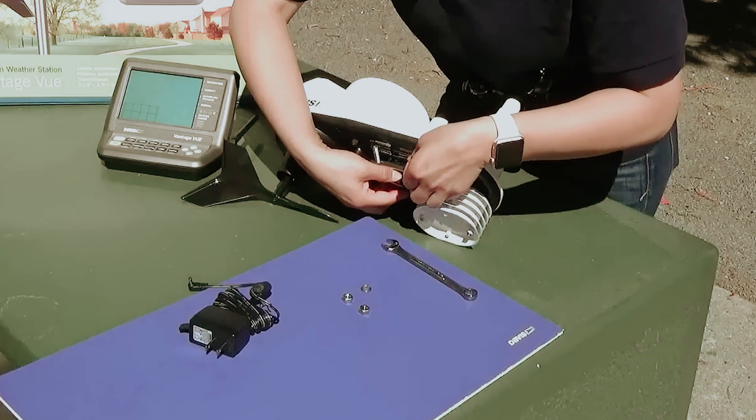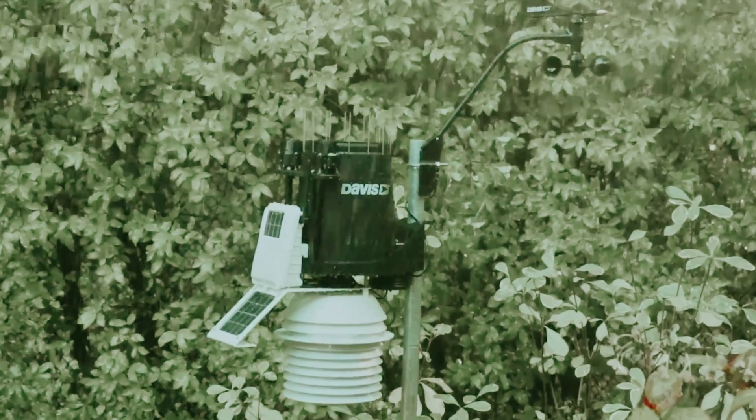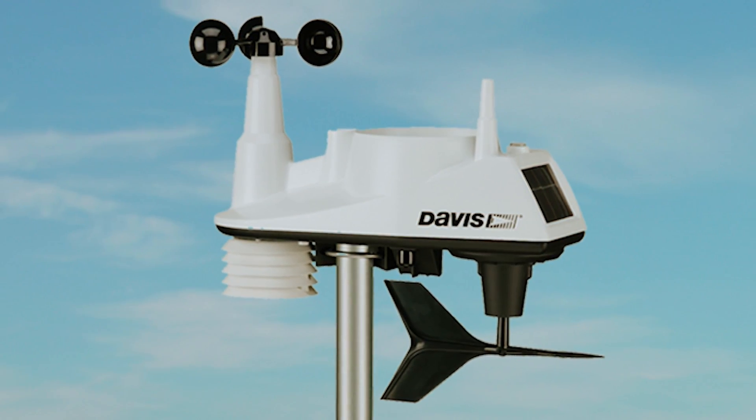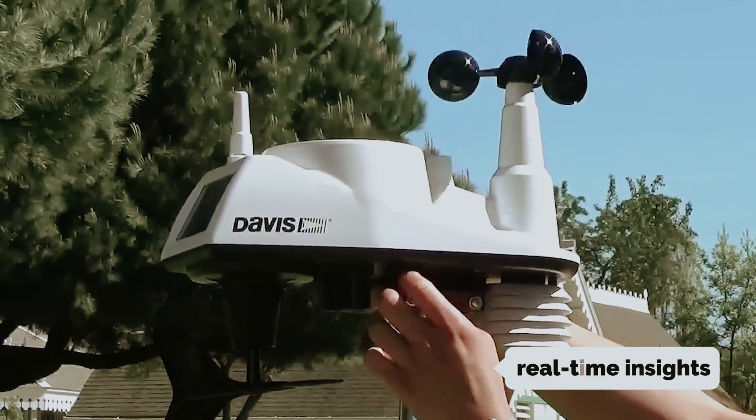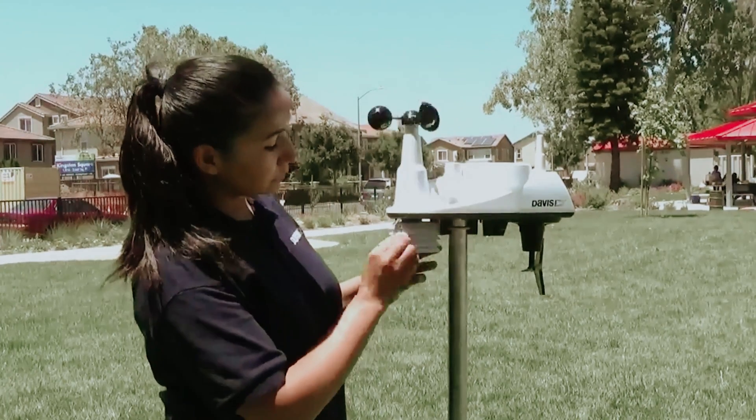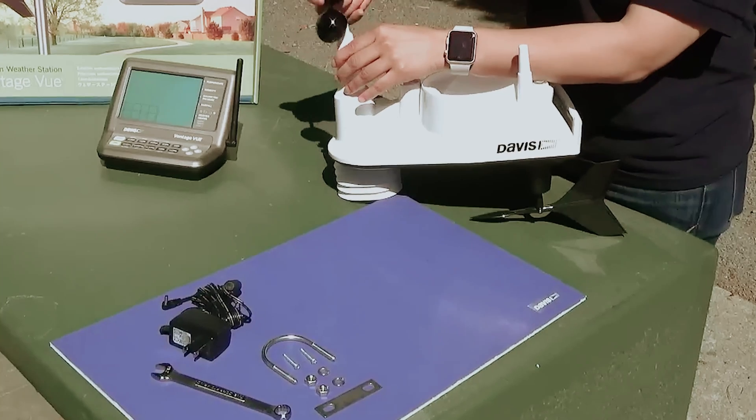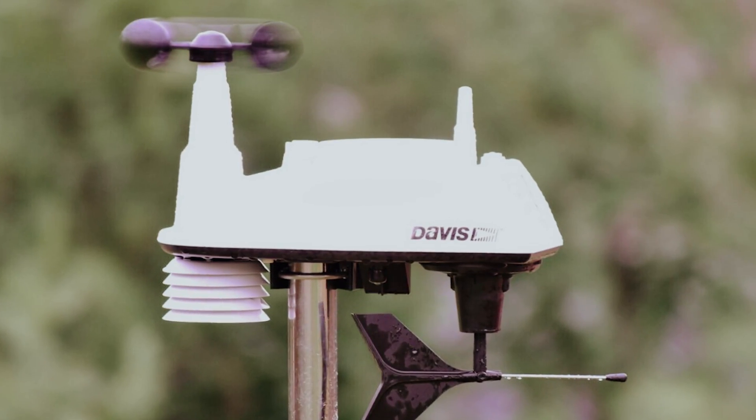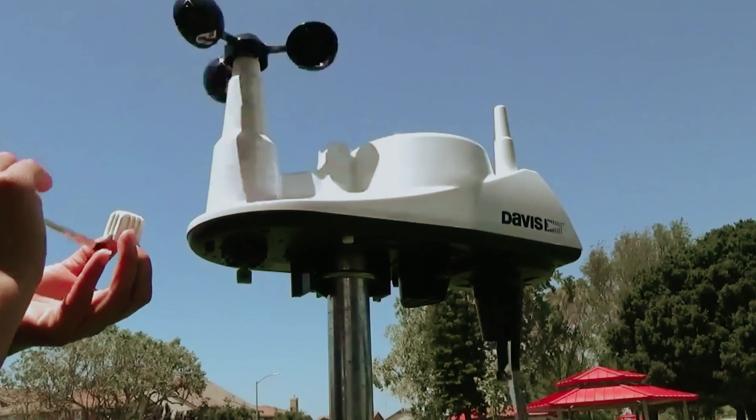This new console enhances your weather monitoring experience with a sleek design and improved functionality, making it easier for you to access and interpret the data that matters most to you. Now you can enjoy advanced features that simplify your weather tracking, providing you with real-time insights and a user-friendly interface. Whether you are an avid weather enthusiast or simply want to keep an eye on local conditions, the WeatherLink console allows you to engage with the data in a more meaningful way. With the Vantage View and the new console, you can confidently embrace accurate weather readings, extensive data logging, and enhanced connectivity.